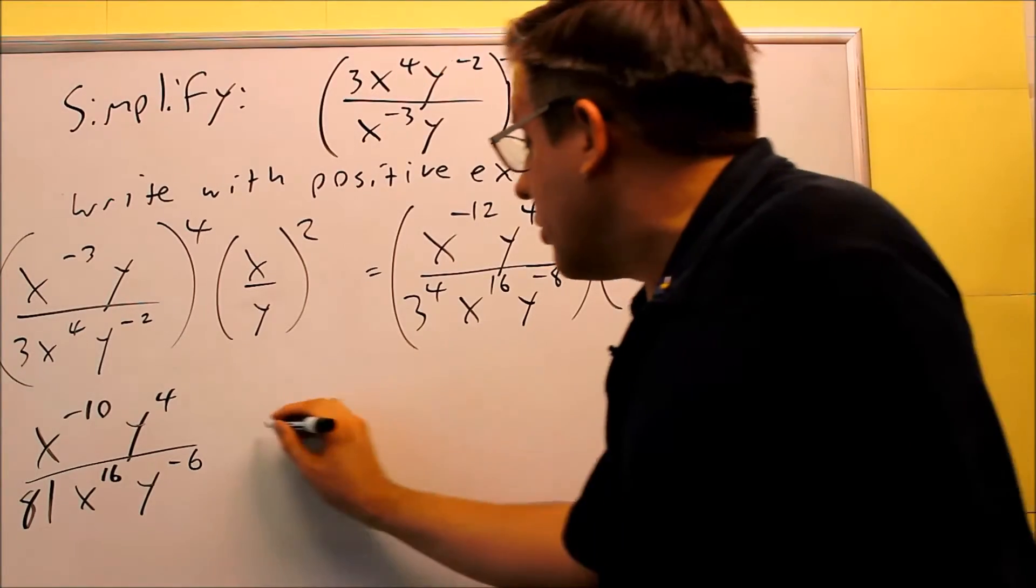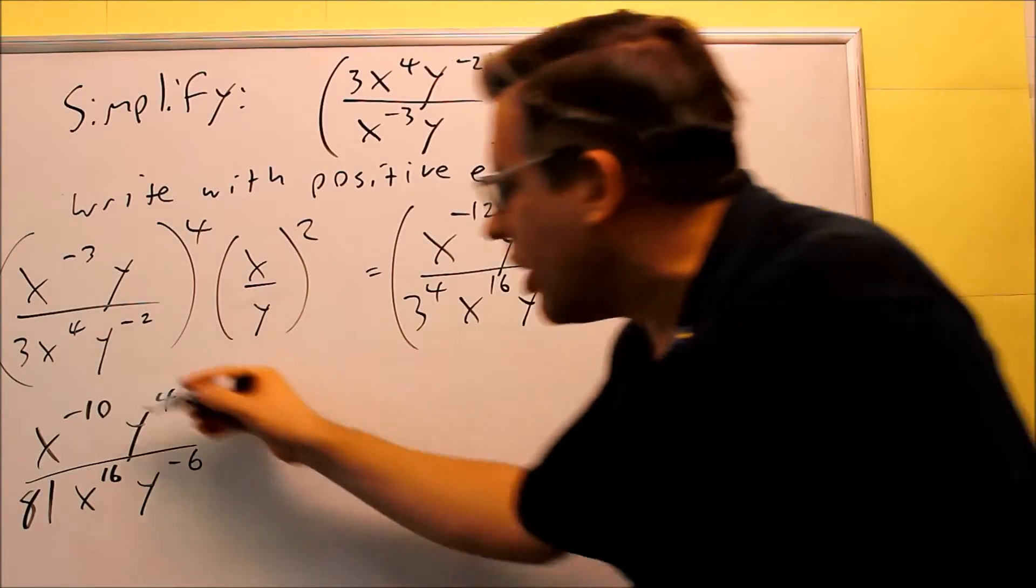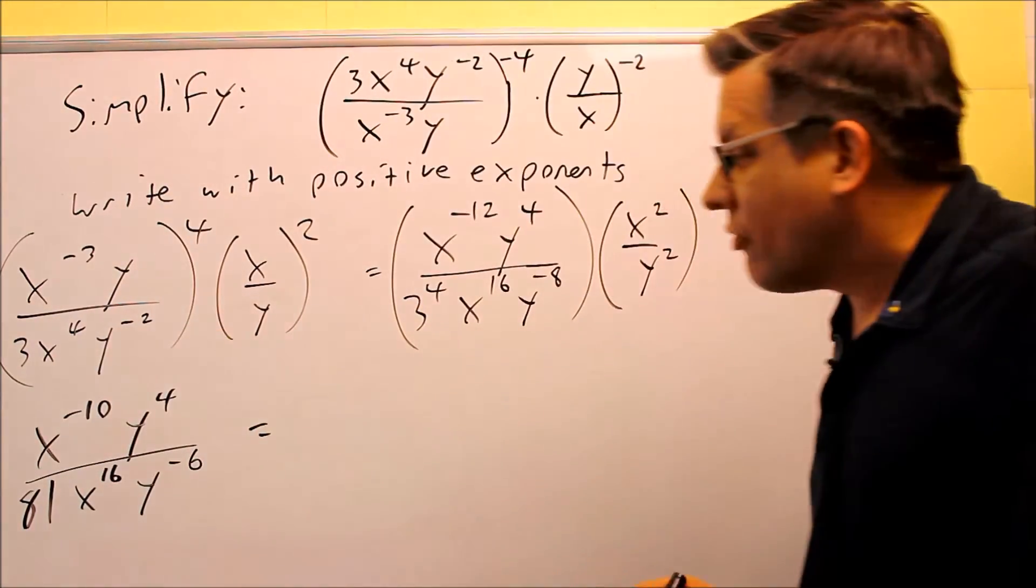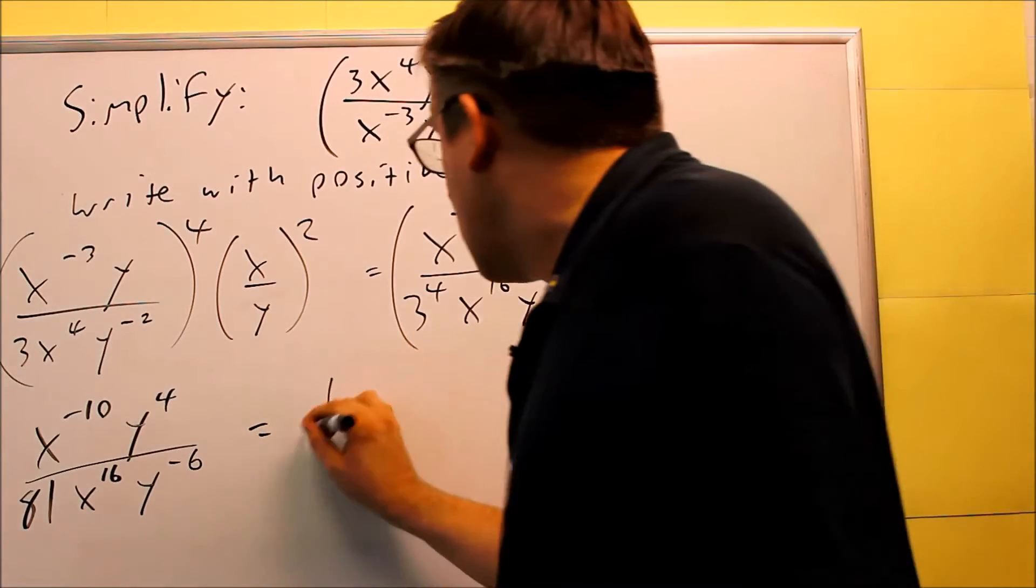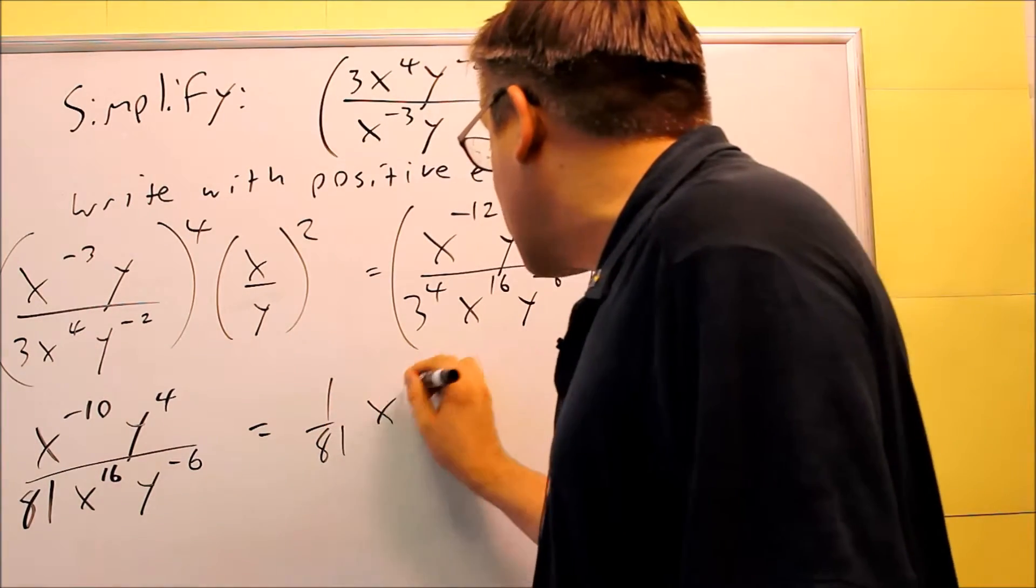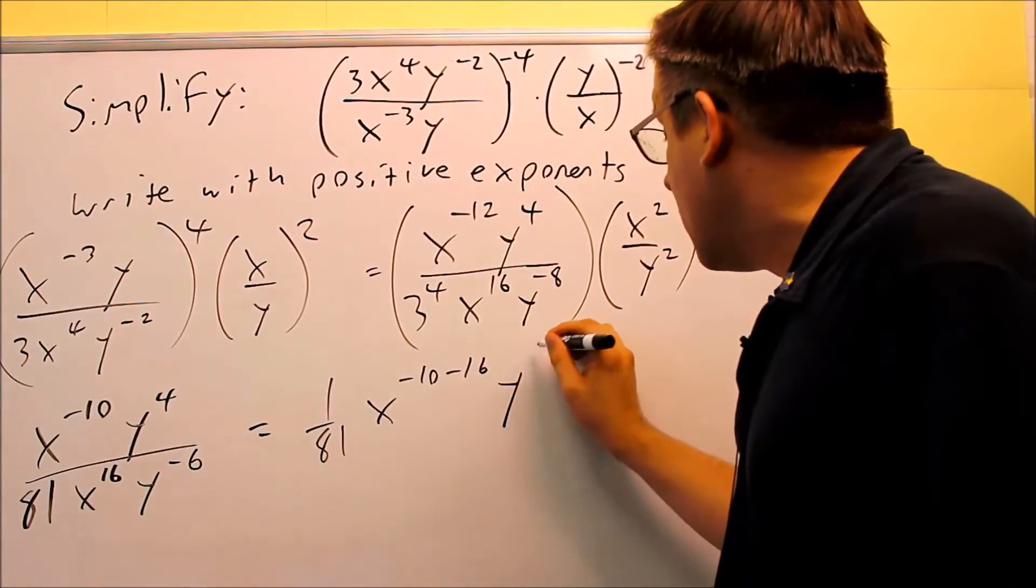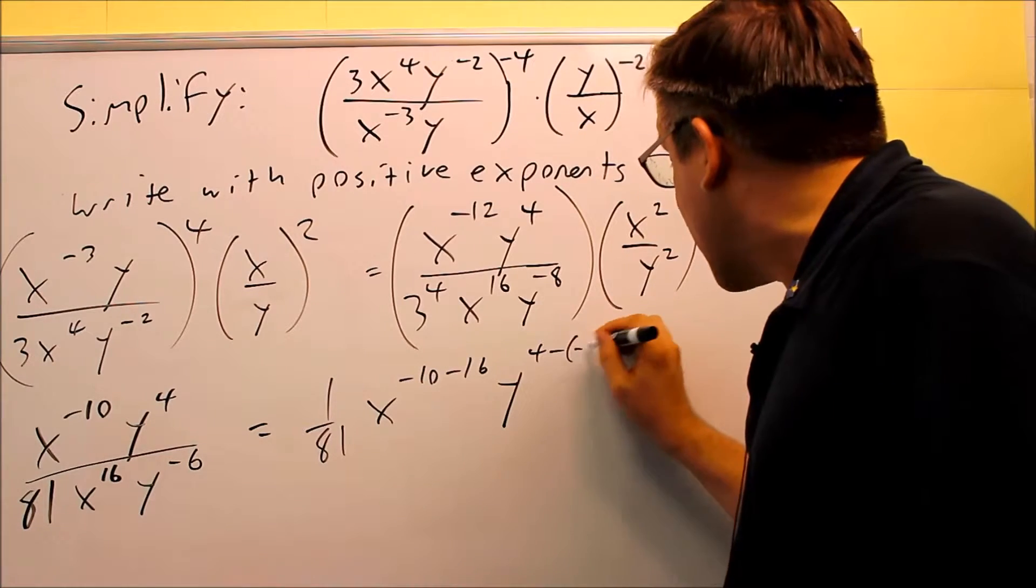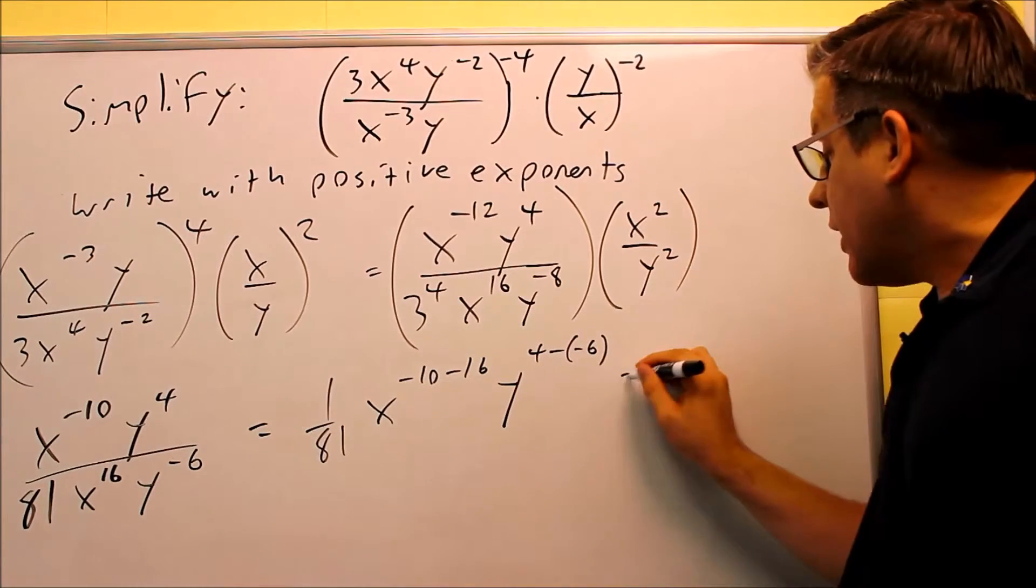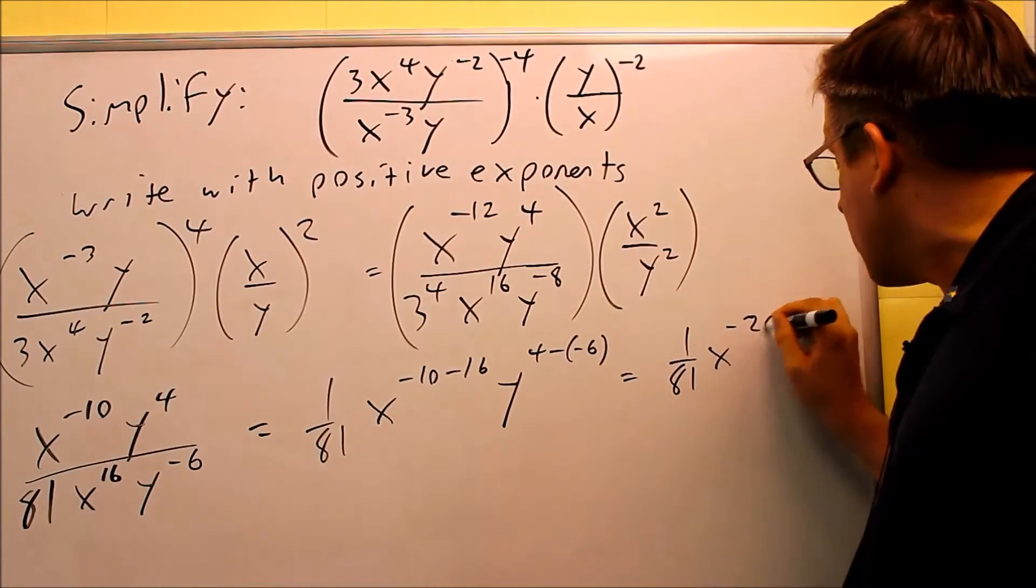Next thing I want to do is I need to combine this together into just one x and one y. I can do that by subtracting. So if I have the top one minus the bottom one, I can subtract the exponents. So I have 1 over 81, I have x to the negative ten minus sixteen. And I have y raised to the four, it's always the top one minus the bottom one, four minus negative six. And that's going to leave us with 1 over 81, x to the negative twenty-sixth, and then y to the tenth power.